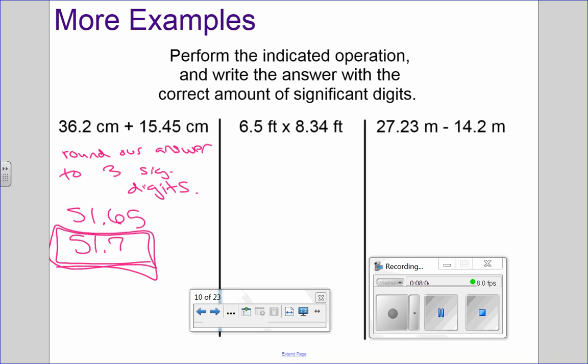Let's do the next one. How many significant digits in this one? Two. How many in here? Three. So we want to round our answer to two significant digits. So it was 6.5 times 8.34 is 54.21. We want two significant digits. What should we round it to? Fifty-four. Fifty-four. Very good.